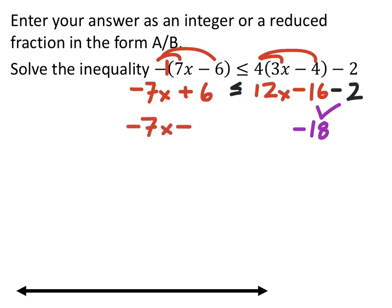Now we got -7x + 6 is less than or equal to 12x - 18.